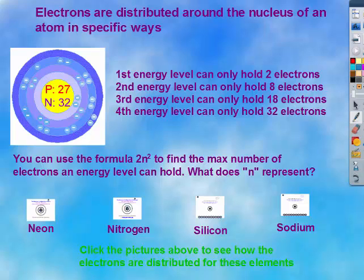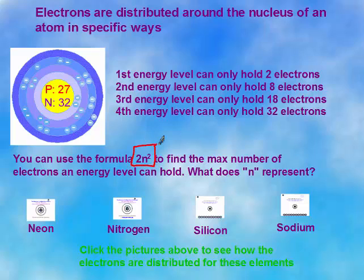To figure out how many electrons an energy level can hold, you use the equation 2n squared, where n is the energy level. So if we're looking at the third energy level, it'd be 3 squared, which is 9, times 2, which gives you 18.